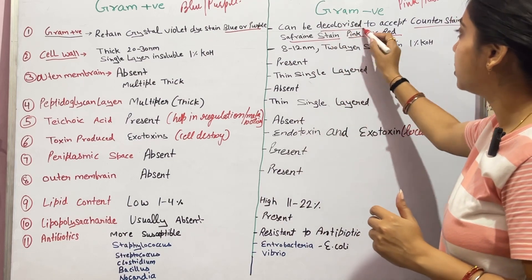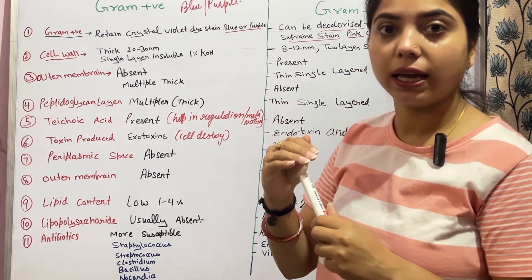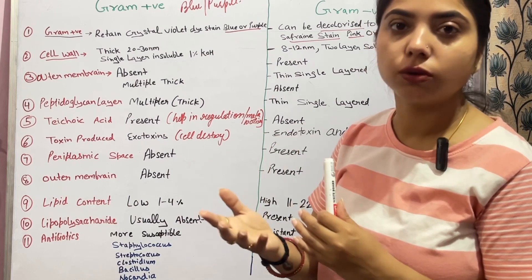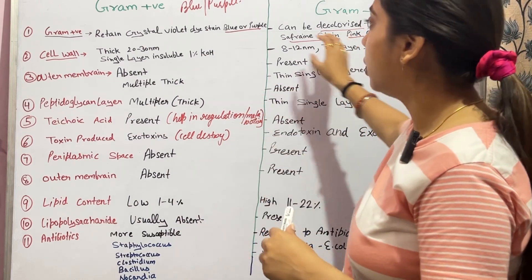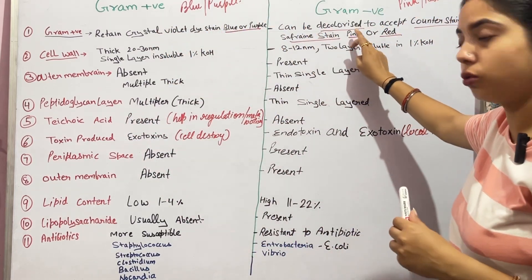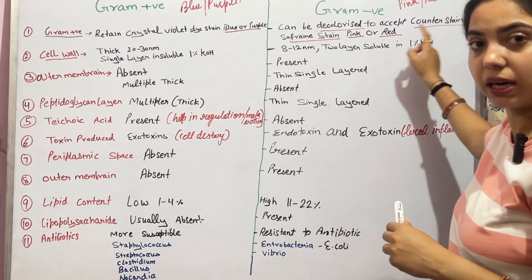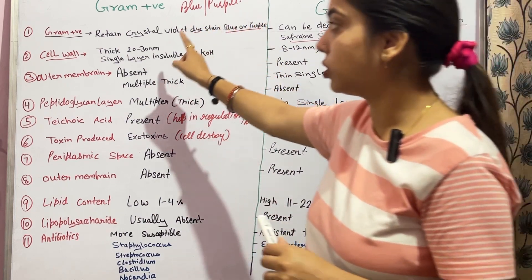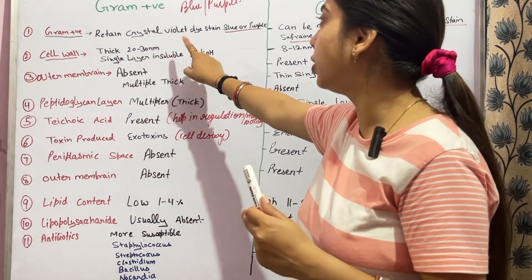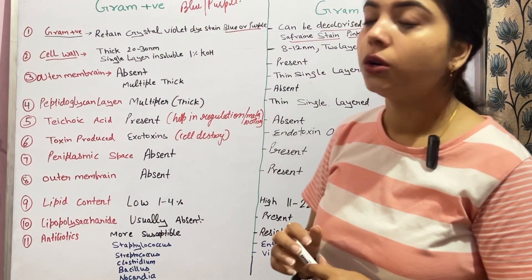When we talk about decolorization, gram positive bacteria will not be decolorized, while gram negative bacteria will be decolorized during the procedure. This is why gram negative bacteria take on the color of the second counter stain, which is pink or red. Gram positive bacteria are not decolorized, so the primary stain — crystal violet — keeps its color, resulting in blue or purple.